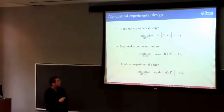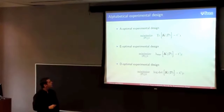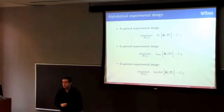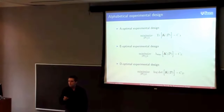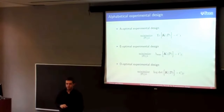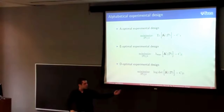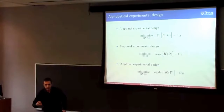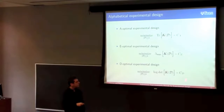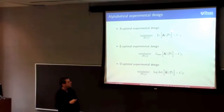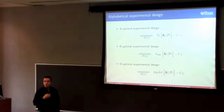In alphabetical experimental design, criteria are named by letters. In A-optimal design, we minimize the trace of the error matrix, which represents the mean square error of the estimator. In E-optimal design, we look at the maximum eigenvalue of that matrix, which is a robust version of the trace that minimizes error for the worst choice of transformation matrix H. In D-optimal design, we minimize the determinant (or log-determinant) of the matrix, which is related to the volume of the confidence ellipsoid of the estimator for Gaussian data. Normalizing constants ensure the function evaluates to 0 at the empty set.